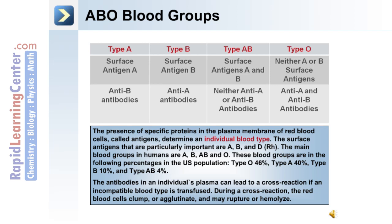These blood groups are in the following percentages in the U.S. population: type O represents 46%, type A 40%, type B 10%, and type AB 4%. The antibodies in an individual's plasma can lead to a cross-reaction if an incompatible blood type is transfused. During a cross-reaction, the red blood cells clump or agglutinate and may rupture or hemolyze. Type A has surface antigen A and anti-B antibodies. Type B has surface antigen B and anti-A antibodies. Type AB has surface antigens A and B, and neither anti-A nor anti-B antibodies. Type O has neither A nor B surface antigens, but has both anti-A and anti-B antibodies.